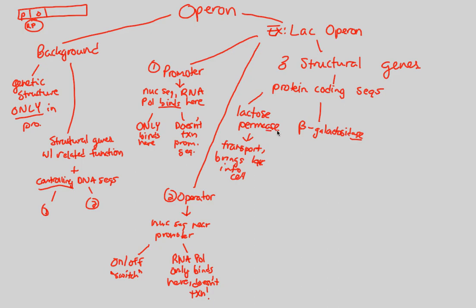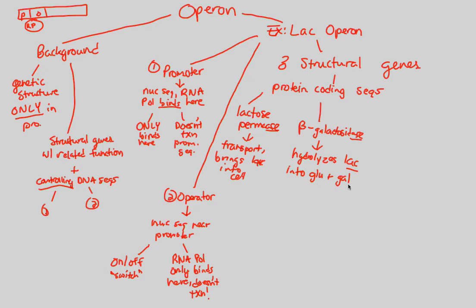Beta-galactosidase, or B-gal, is important in hydrolyzing lactose. Hydrolysis means breaking down, so B-gal breaks lactose into its structural components: a glucose molecule and a galactose molecule. Lactose consists of glucose and galactose, and we metabolize lactose by hydrolyzing it using this enzyme.